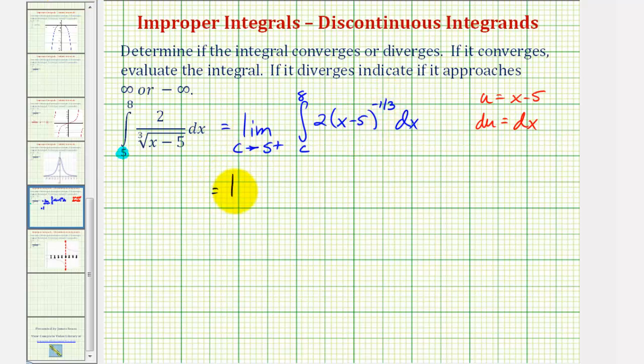So we'd have the limit as c approaches five from the right of two times the quantity x minus five to the two-thirds power, divided by two-thirds, our limits of integration are from c to eight.